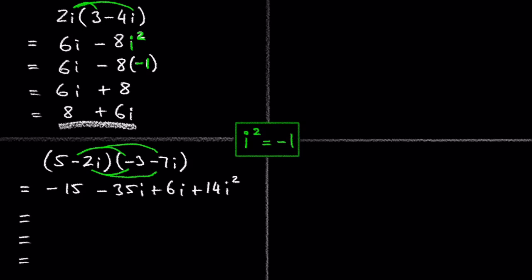i squared is negative 1, and 14 times negative 1 is negative 14.